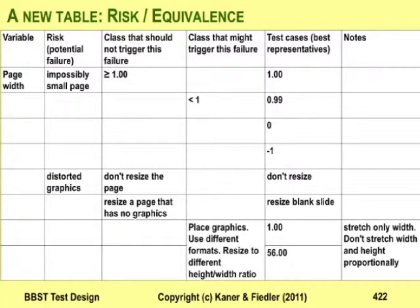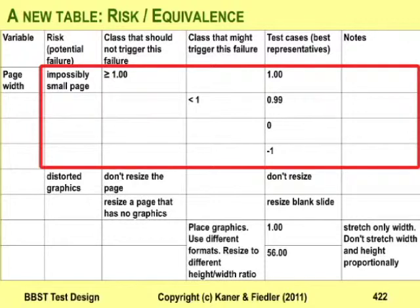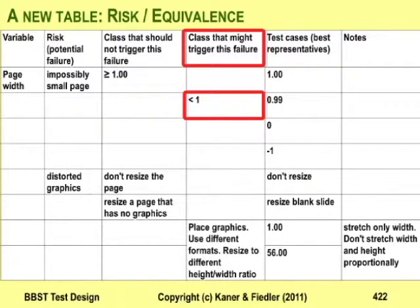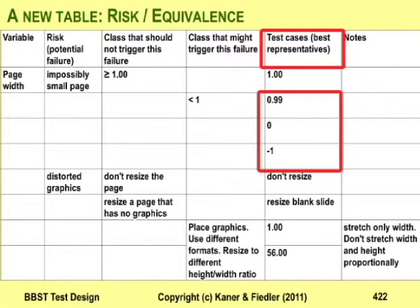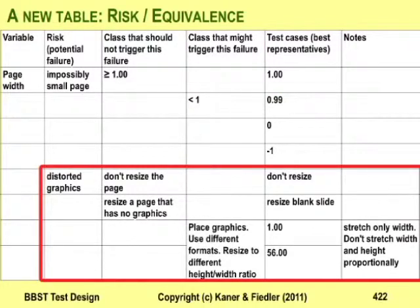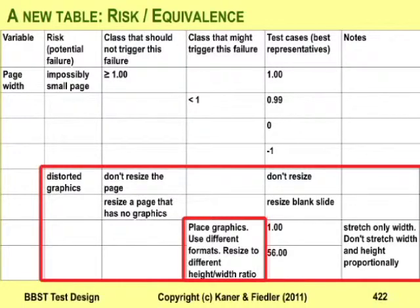The table shows two specific risks. The first is that the program attempts to create a page that's too small — the obvious way to trigger this is to give it a page width less than an inch. The table lists three tests: the boundary case 0.99, a zero, and a negative page width. The second risk is that the program will distort graphics when you resize the page. When you focus on that risk, you'll recognize the program might corrupt some types of graphics more than others, so the best version of this test includes different slides with different types of graphics — some bitmaps and some in scalable formats.